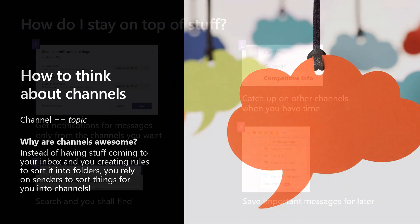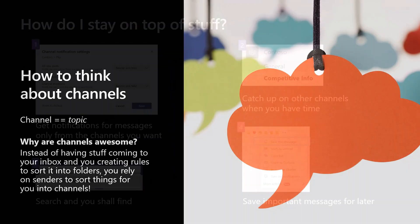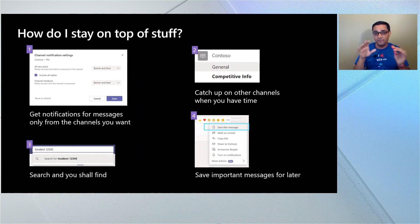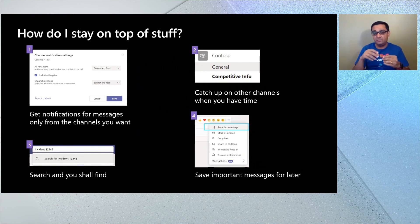Your question might be: I created these channels, stuff is happening in a bunch of different places — how do I stay on top of it? Here are four main ideas. First, you should set up your channel notification settings so that you get a notification for channels where stuff is happening that you work on. For example, I work on bots supporting Teams, so I set up my notification settings for the bots channel so that for every new message and reply, I get a notification.